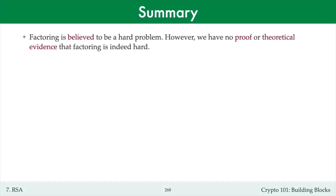In summary, factoring is believed to be a hard problem. However, we have neither proof nor theoretical evidence that factoring is indeed hard. A proof would be a lower bound on any algorithm for factoring, but no such non-trivial lower bound is known. Theoretical evidence might be a statement like 'factoring is NP-hard,' but factoring is not known to be NP-hard, nor is it believed to be NP-hard. So the only evidence we have for factoring being hard is human ignorance — namely, the last 35 years of research has not resulted in any improvement to the number field sieve factoring algorithm.